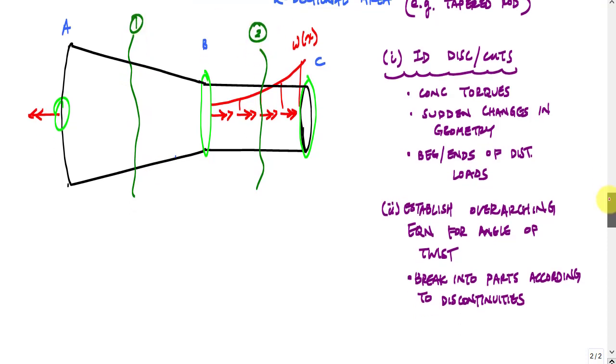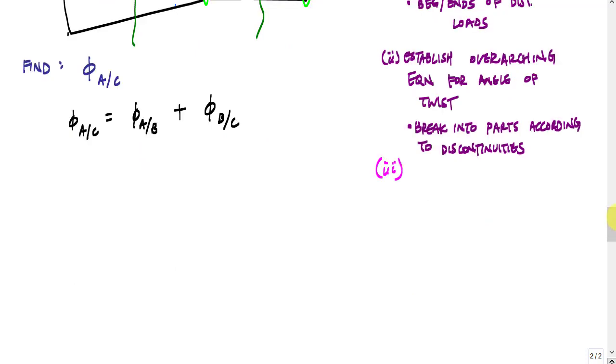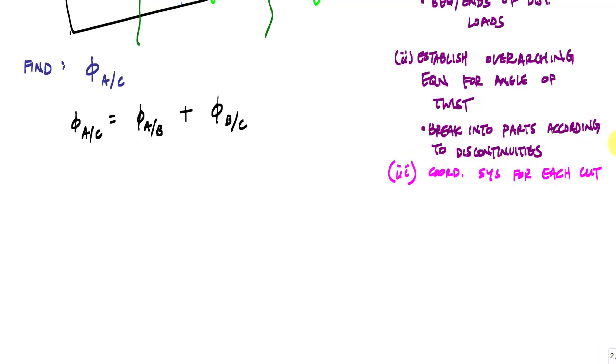And I can establish an overarching relationship for the angle of twist. I want to find the angle of twist of end A with respect to C and this overarching relationship right here. The angle of twist of A with respect to B plus the angle of twist of B with respect to C. So based on my discontinuities, I was able to identify the segments that I want to break it up into. Now, whenever I have either a varying area or a distributed load, I want to do one more thing. I want to establish a coordinate system for each cut. And that means identifying an origin and that origin you want to put at a discontinuity and then you want to identify the range of the coordinate system.